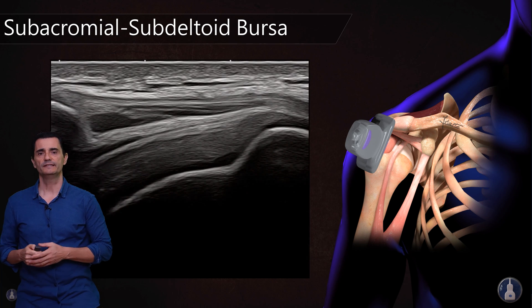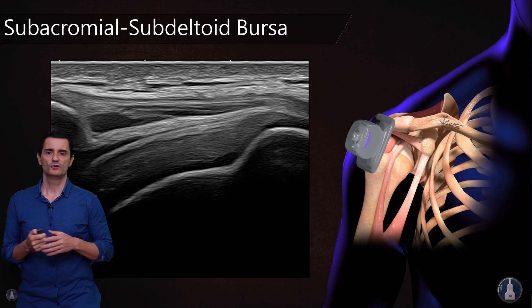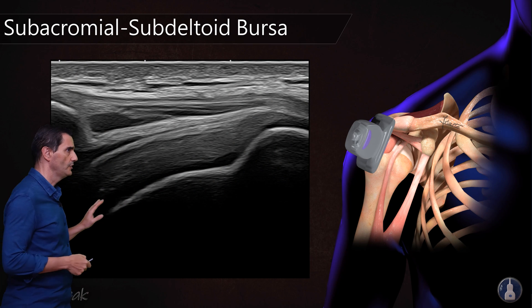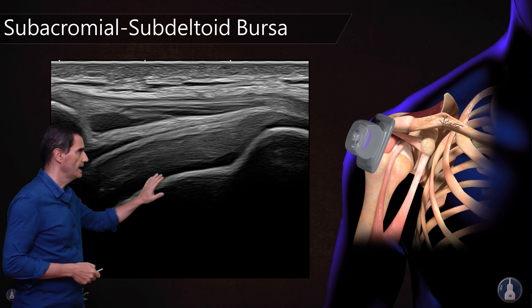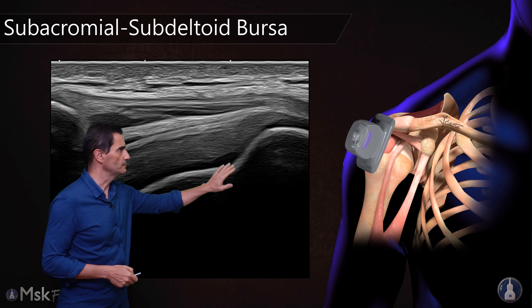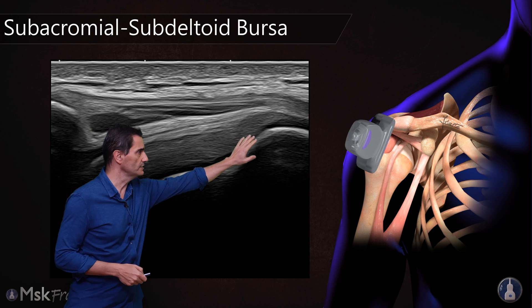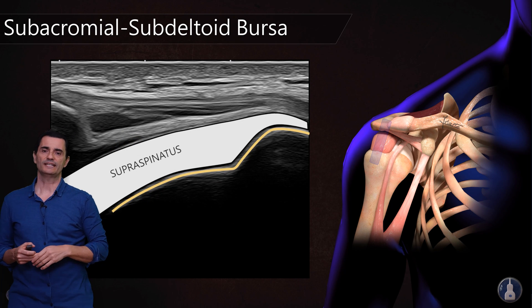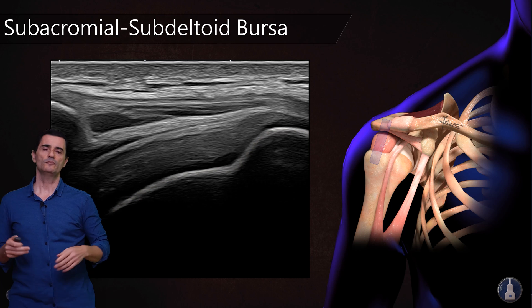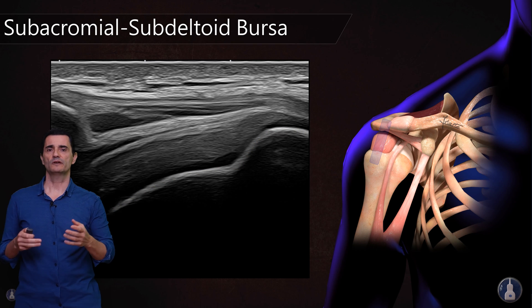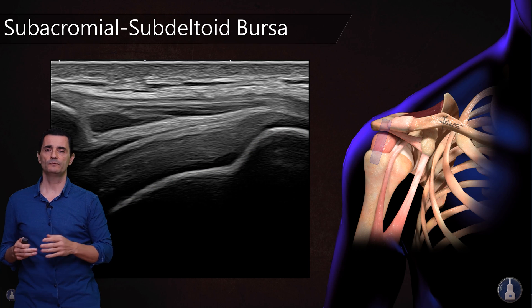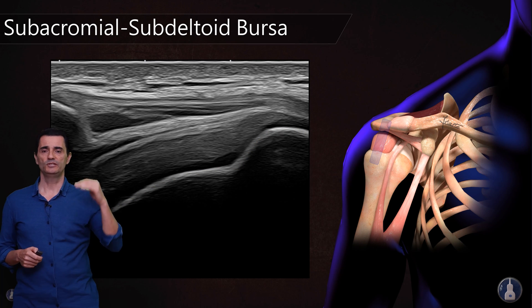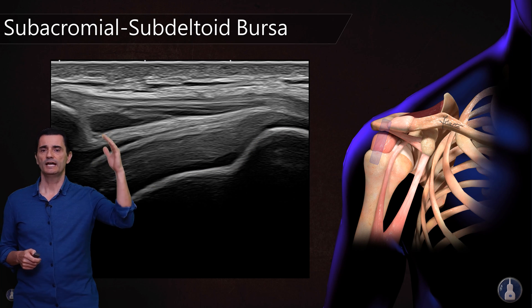We will obtain this image with the humeral head and the supraspinatus footprint, so this will be the supraspinatus tendon.